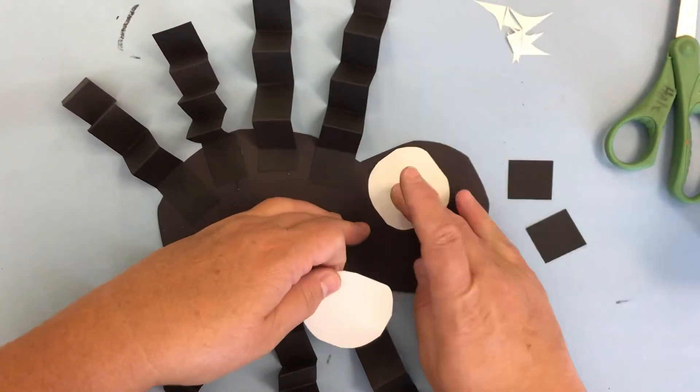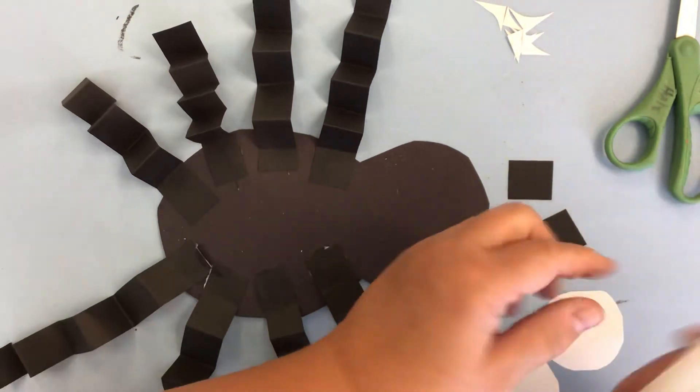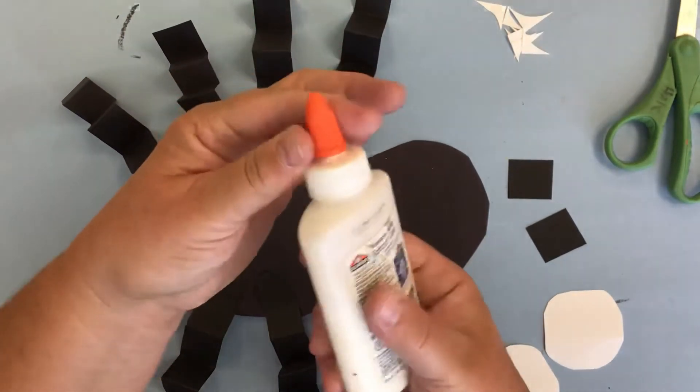I've got that cut. I'm going to make a pile of my scraps. I'm going to take my glue bottle. Open the top.